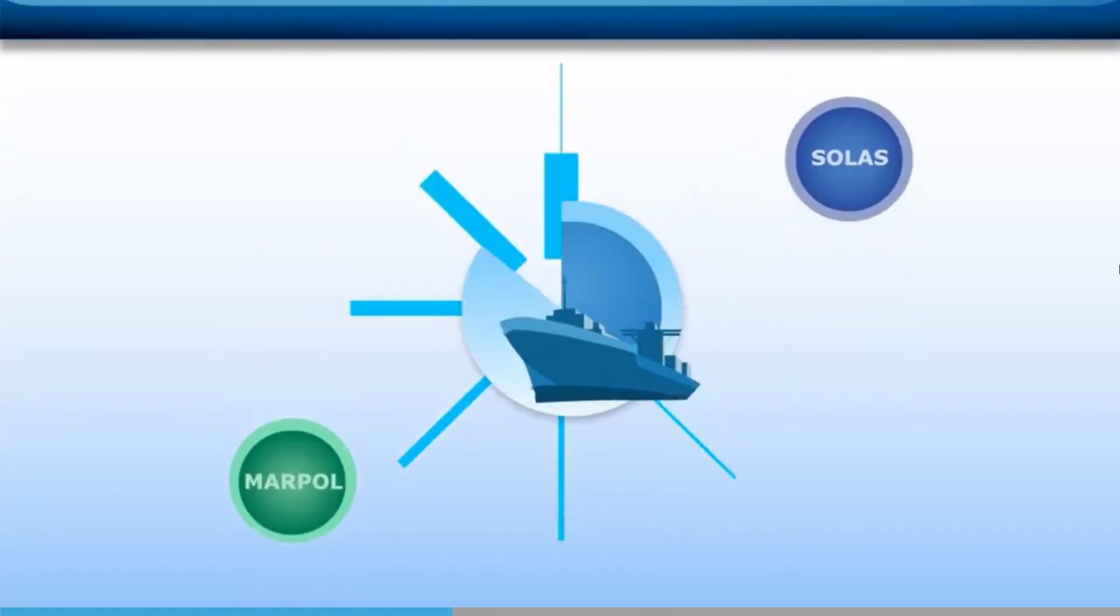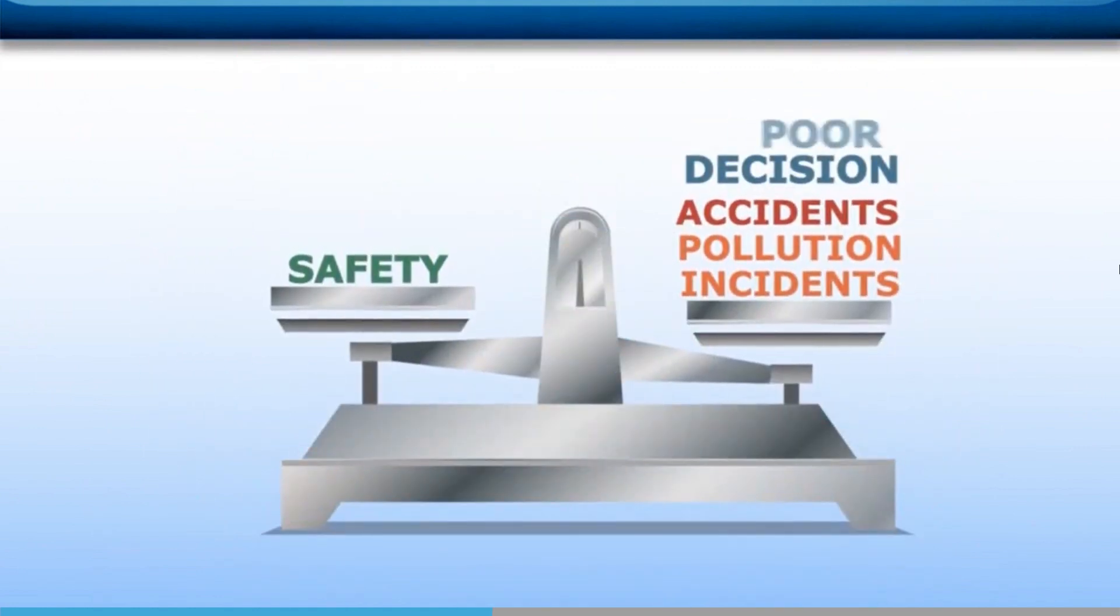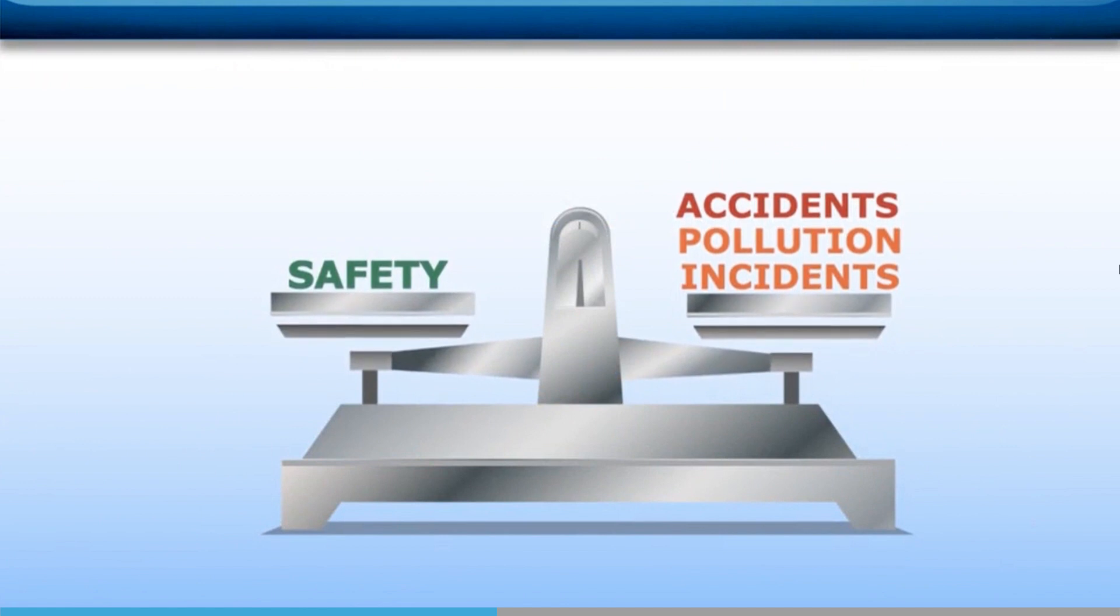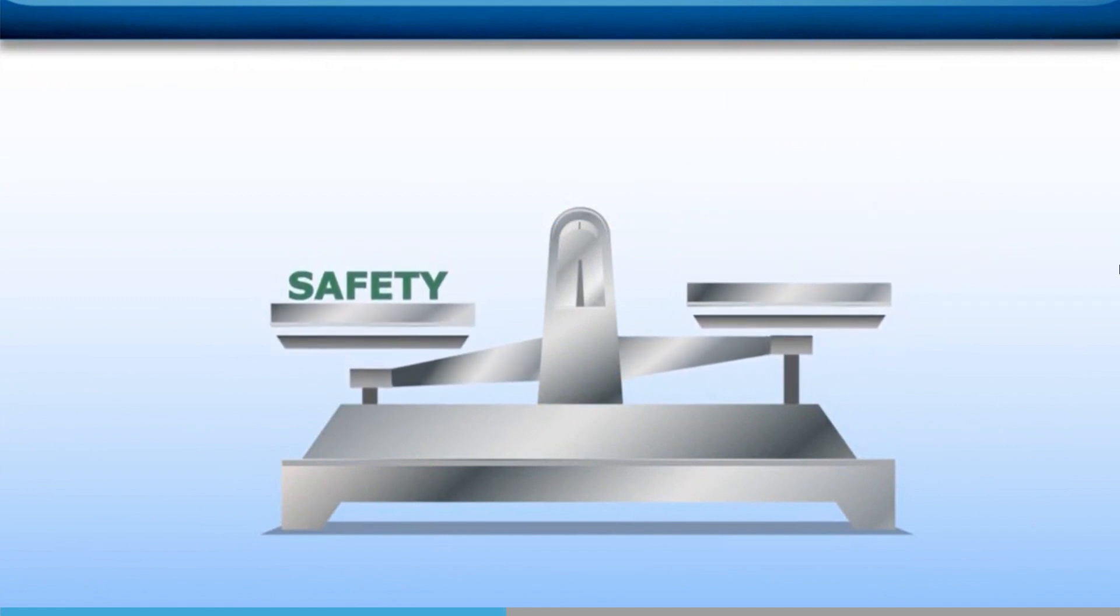Although the ISM code is part of SOLAS, the main body of SOLAS is concerned with how ships are built and equipped, while MARPOL gives the regulations on pollution avoidance. In essence, all shipping companies are faced with the same task: to minimise the scope of poor decisions that can either directly or indirectly contribute to casualties or pollution incidents, including the decisions taken ashore as well as those on board ship.